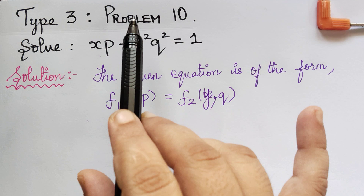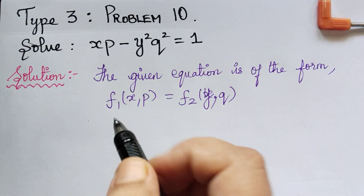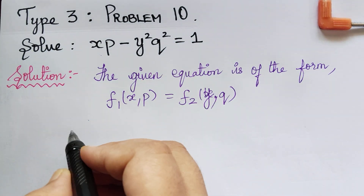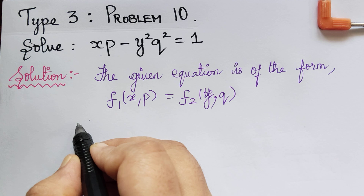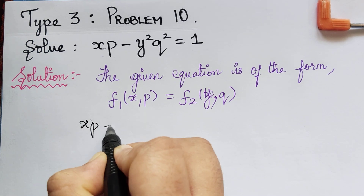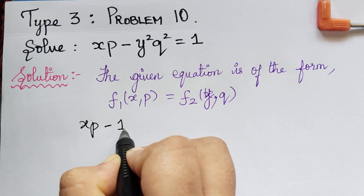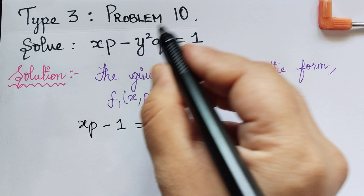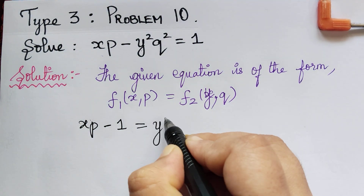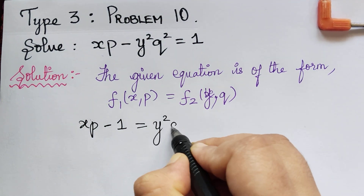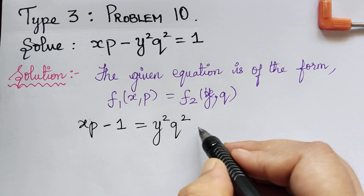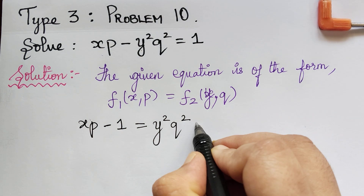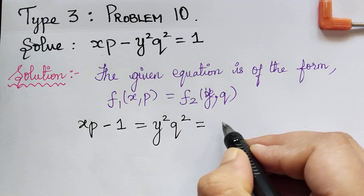So, we can rewrite this given equation by taking this term to the left. It can be rewritten as xp minus 1 is equal to y squared q squared, and these two parts have to be equated to a constant a.